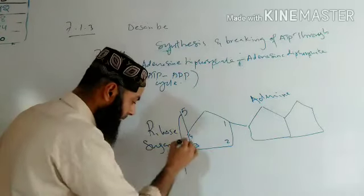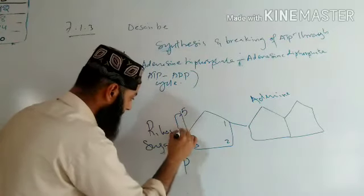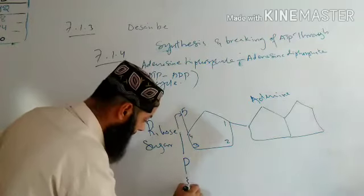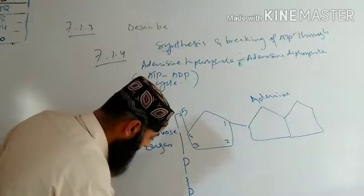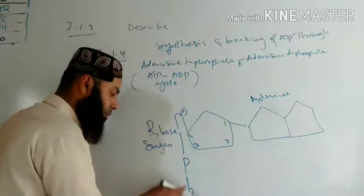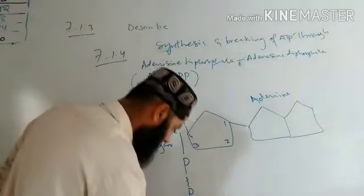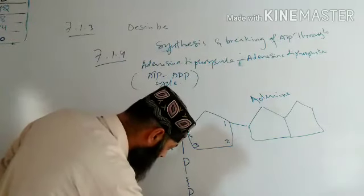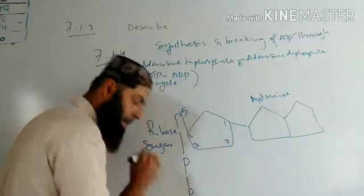Here are the phosphate groups, P means phosphate. These wavy lines show covalent bonds between the phosphates. Energy is stored in these bonds.